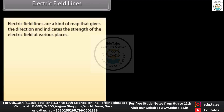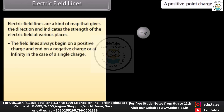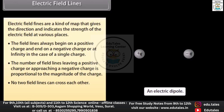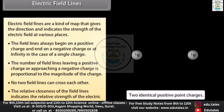Electric field lines are a kind of map that gives the direction and indicates the strength of the electric field at various places. The field lines always begin on a positive charge and end on a negative charge or at infinity. The number of field lines leaving a positive charge or approaching a negative charge is proportional to the magnitude of the charge. No two field lines can cross each other. The relative closeness of the field lines indicates the relative strength of the electric field in various regions.